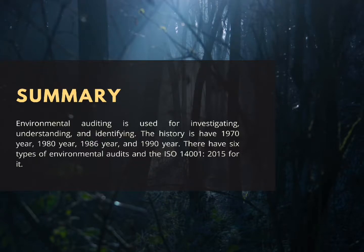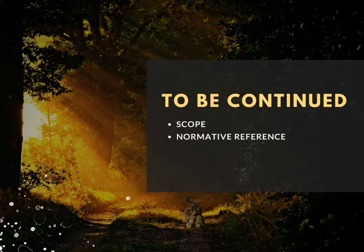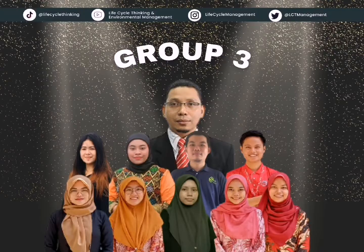In summary for Part One: environmental auditing is used for investigating, understanding, and identifying environmental impact. The history covers the 1970s, 1980s, and 1990s. There are six types of environmental audits, and the relevant standard is ISO 14001:2015. That concludes Part One. Part Two will cover scope, normative references, terms and definitions, and principles. Thank you.